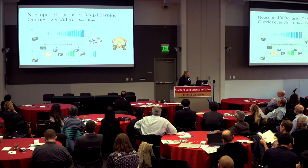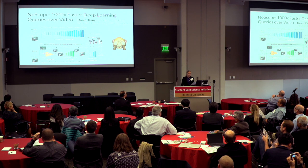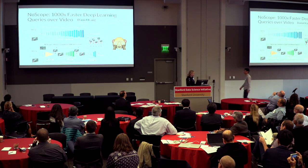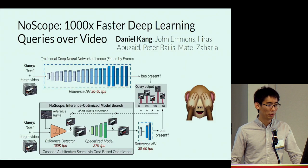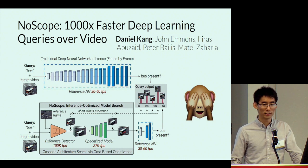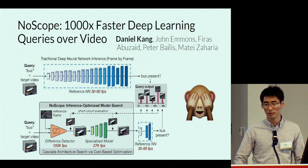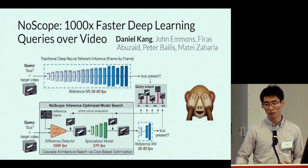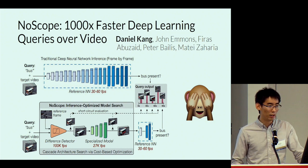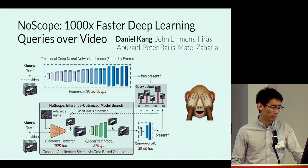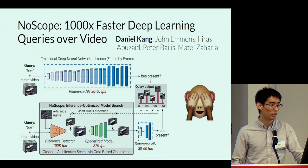Daniel Kang presents NoScope, a system for performing neural network queries over video at scale. A major challenge in large-scale video analysis is the computational bottleneck. NoScope presents three key techniques to reduce this: a difference detector, specialized models, and a method for searching for model cascades to handle the pipeline end to end.